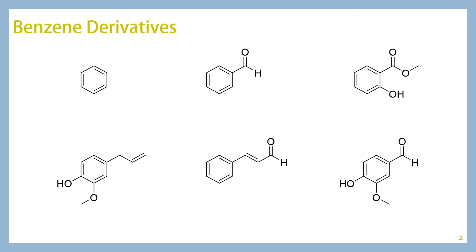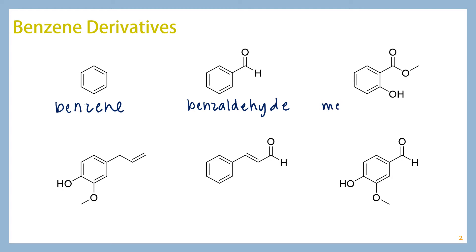Our first structure is the structure of benzene. You're going to get very comfortable drawing that. Our next structure is benzaldehyde. Benzaldehyde has the smell of cherries or almonds — it's actually found in almonds, so it's a commonly used compound for flavoring.